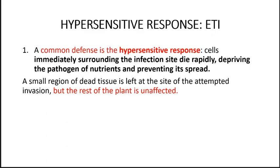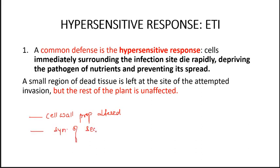When a plant is infected by insects or any pathogenic microorganisms, it responds to those challenges. It shows alteration in the chemical properties of the cell wall. When a plant encounters any pathogen attack, the cell wall properties are altered. Then there is also a synthesis of secondary metabolites. This kind of response when a plant shows after pathogenic attack is known as hypersensitive response.